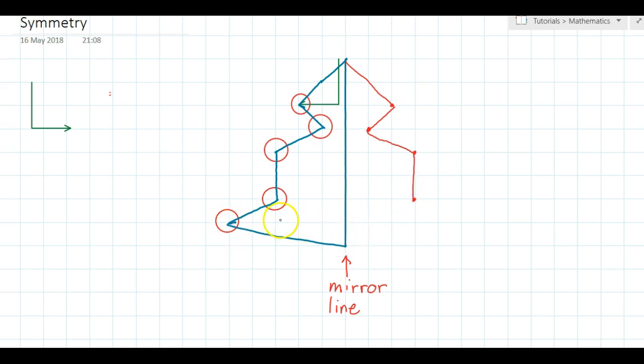And then I look at my last line over here. I've gone one, and then one, two, three, four, five over. So one and then one, two, three, four, five.